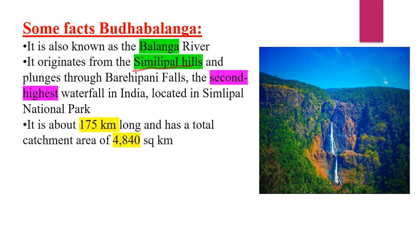The river is about 175 km long and has a total catchment area of about 4,840 square kilometers. That means its basin area is about 4,840 square kilometers.